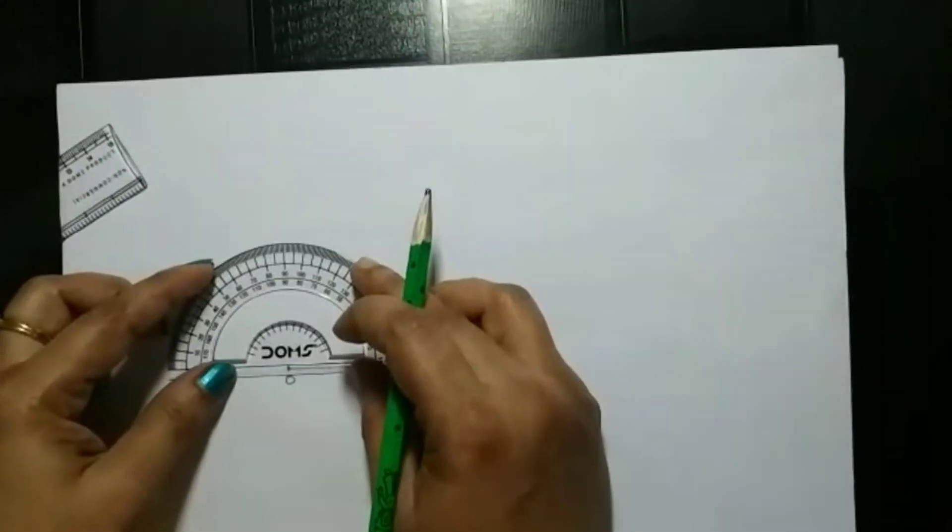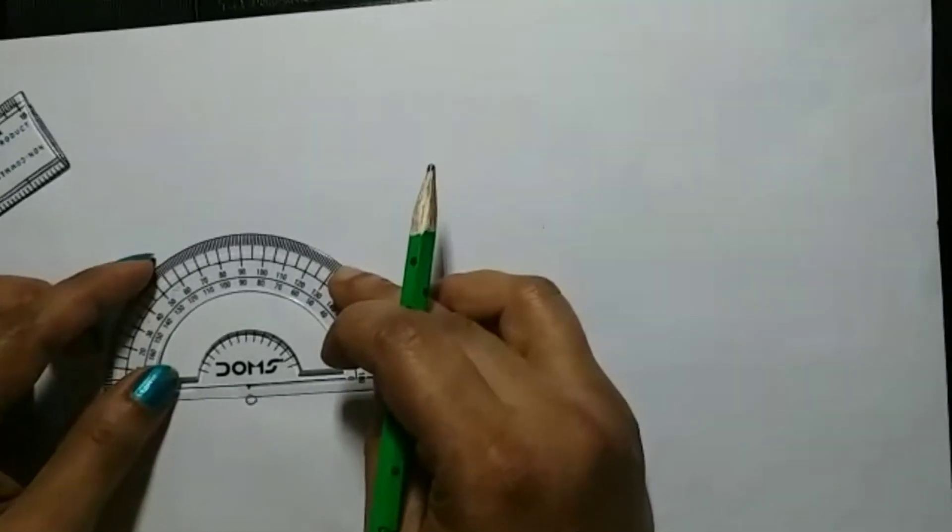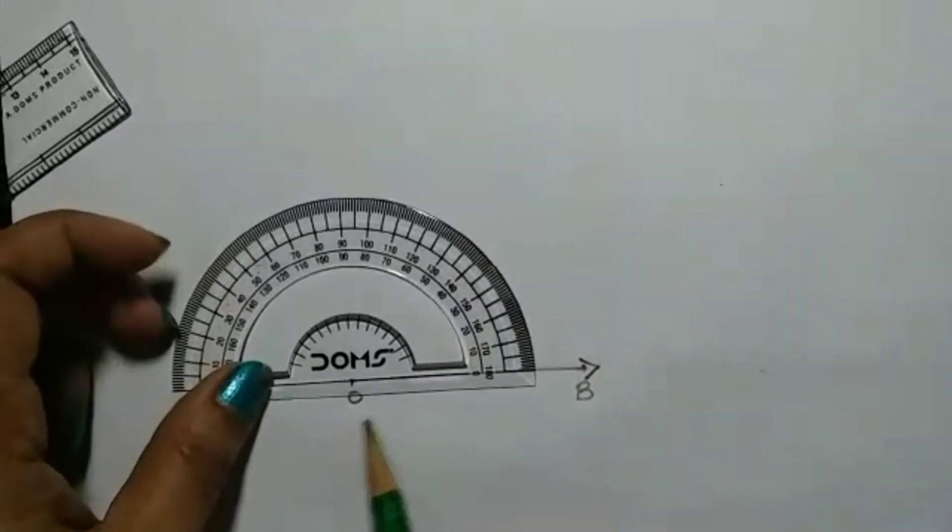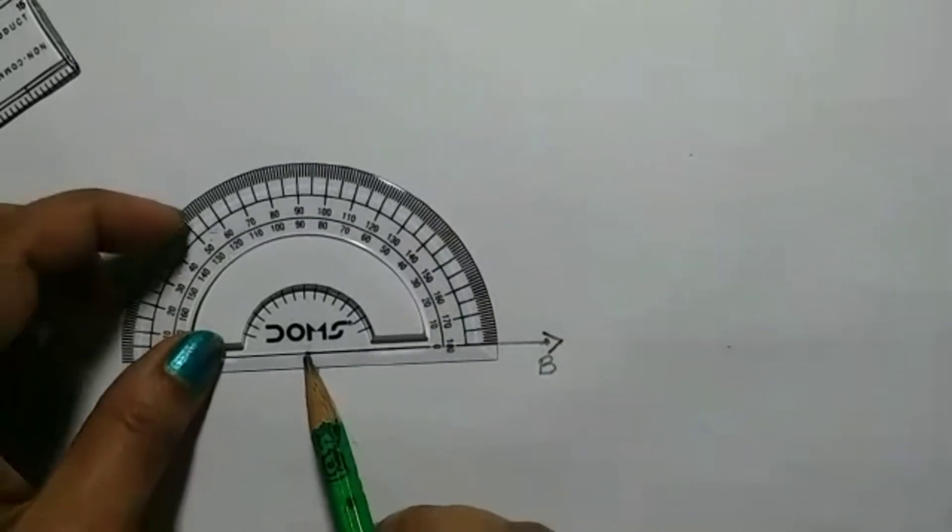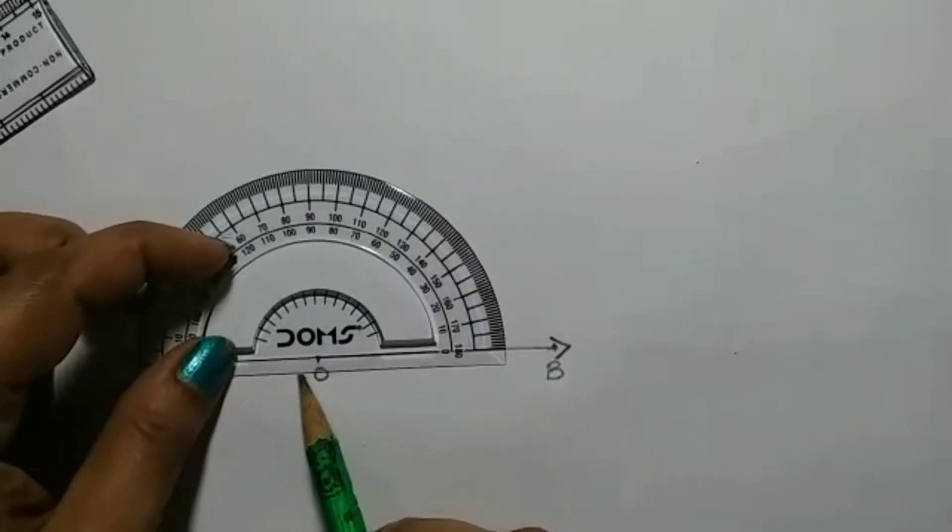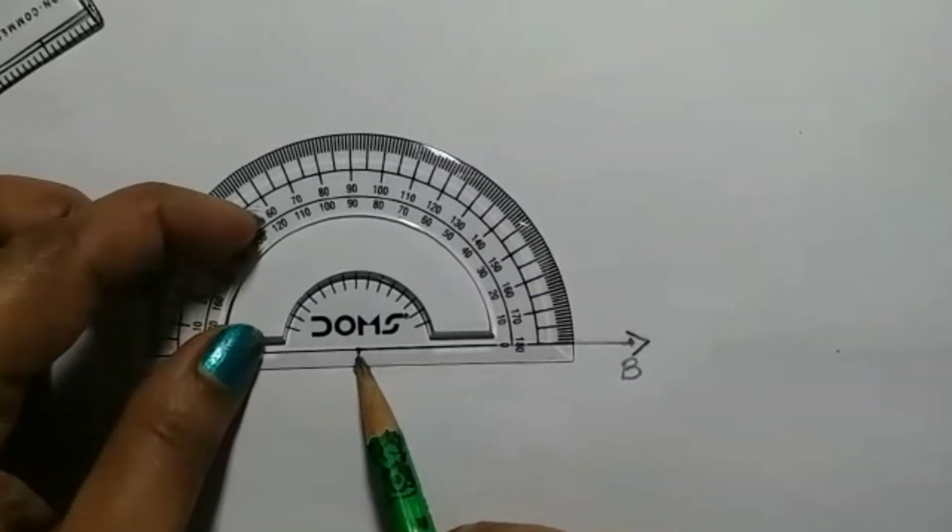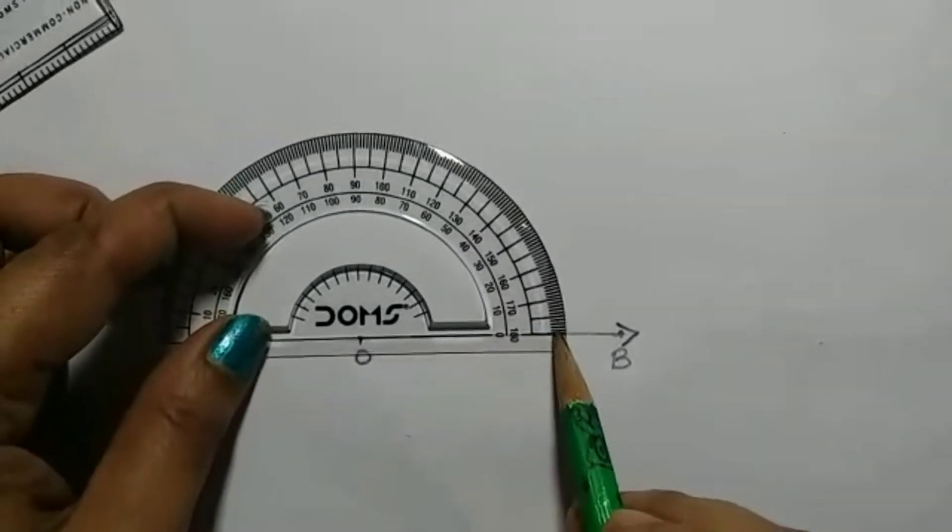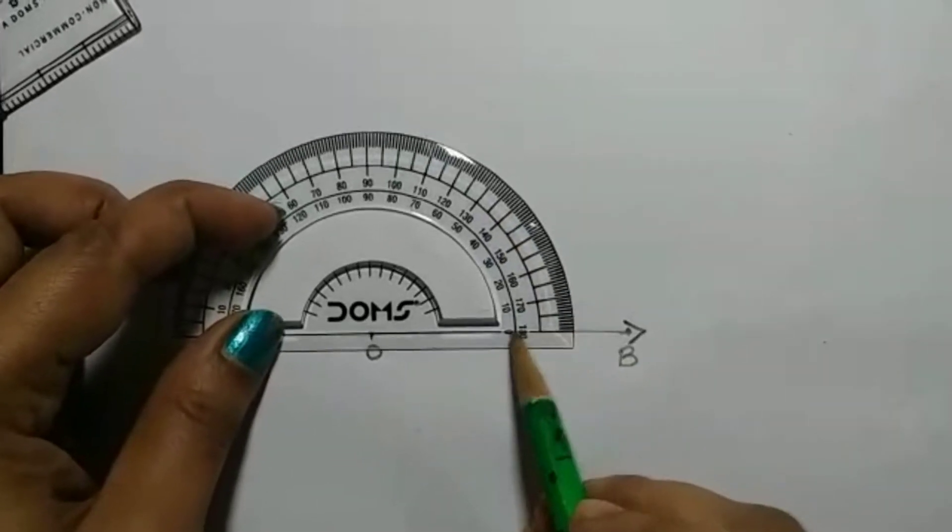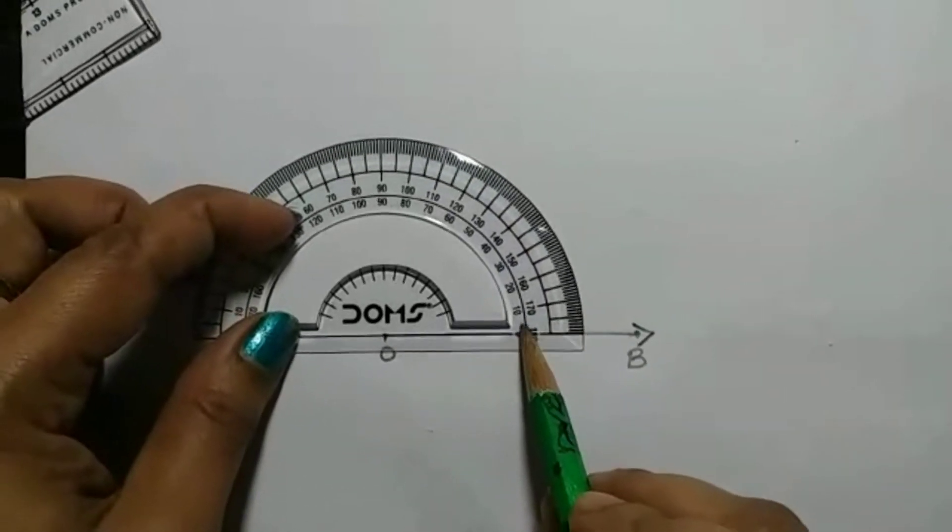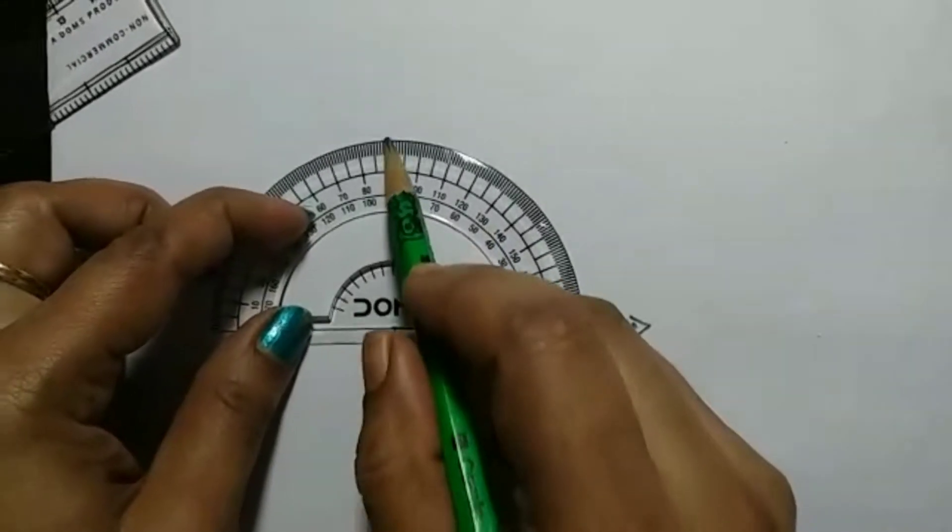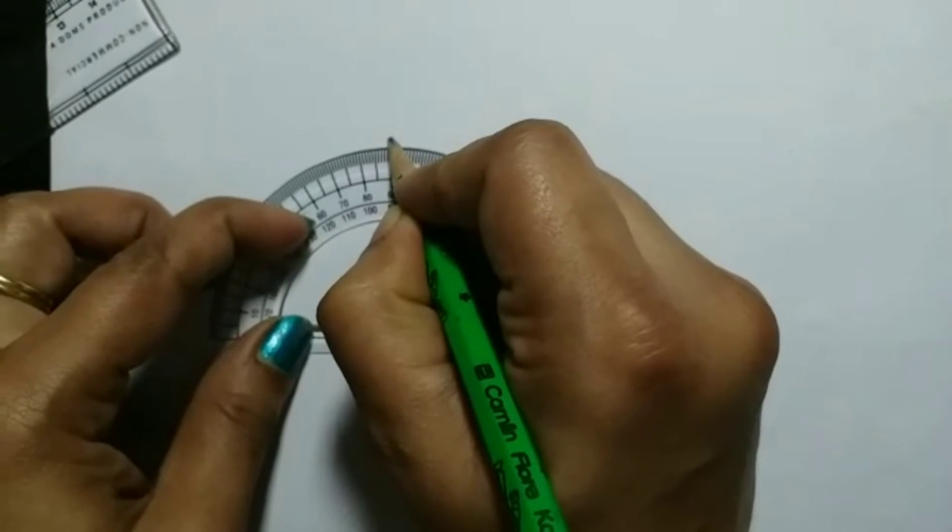Next we have to put our protractor on the ray. See, this is the point O, on top of it I have kept my protractor. Now I have to check which one is 90 degrees. So here when you check, this is 0, so from here you go: 0, 10, 20, 30, and here this is 90 degrees. Just mark the point over there.